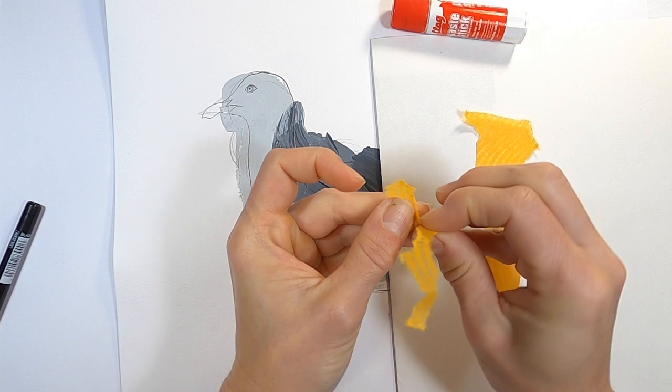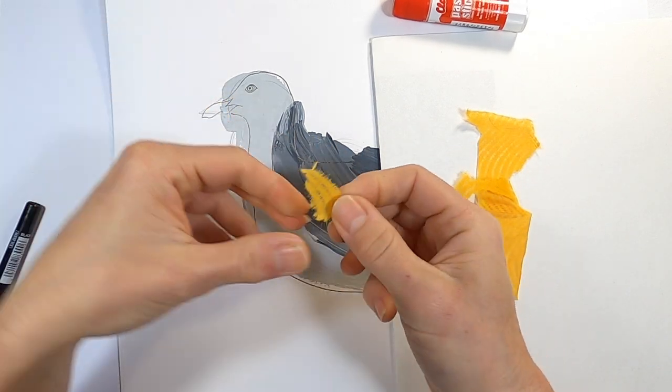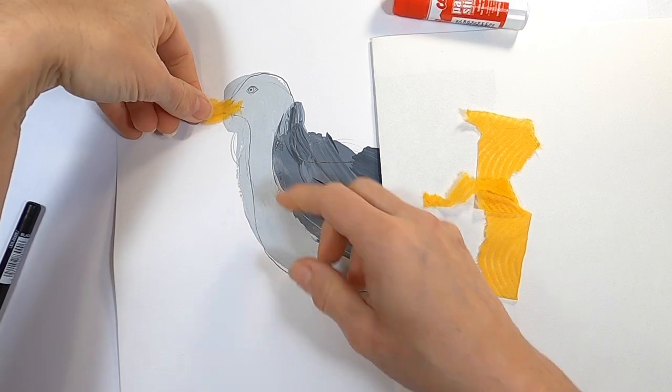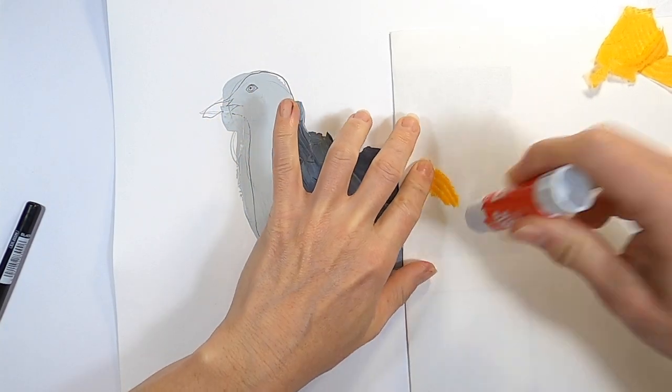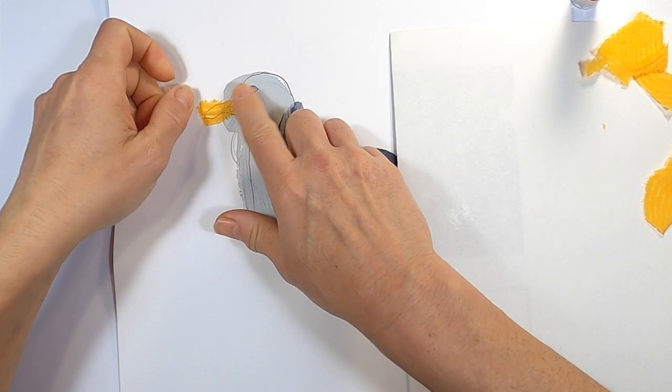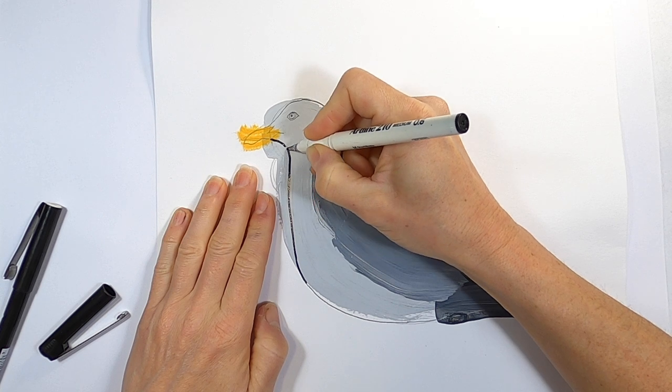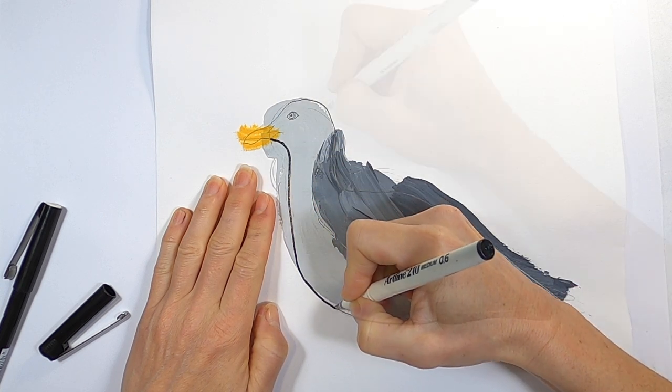I'm gluing a piece of torn yellow tissue paper to the beak area. It doesn't have to be exactly the right size and shape because there will be paint around the bird. Now outline the bird and add the eye and beak with a fine liner.